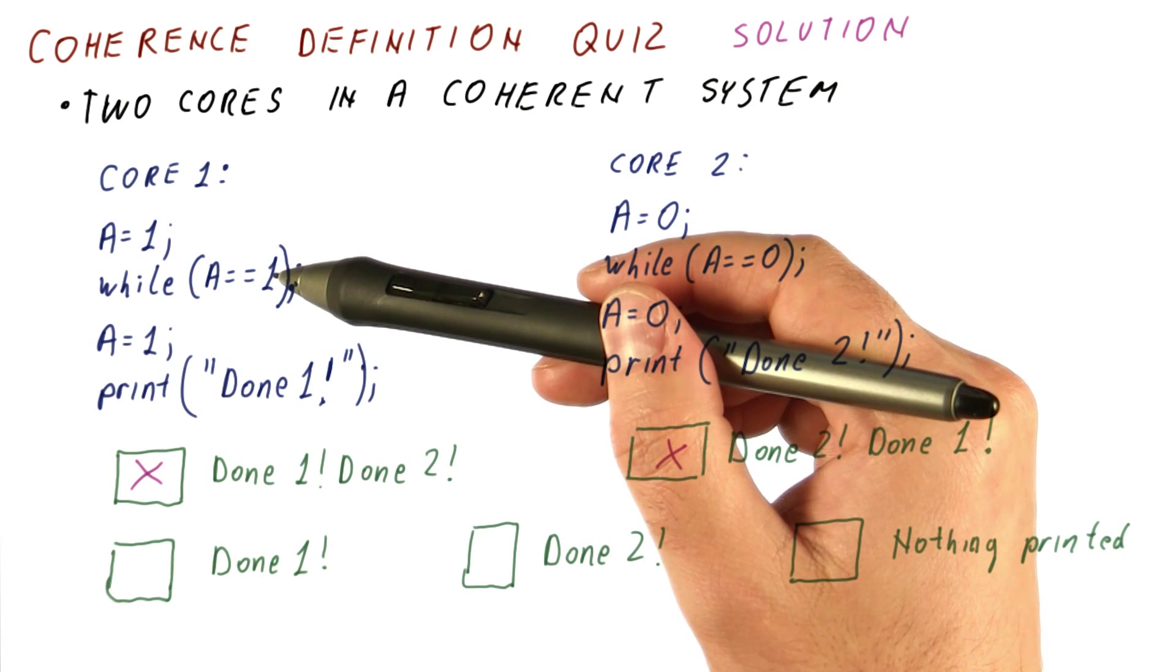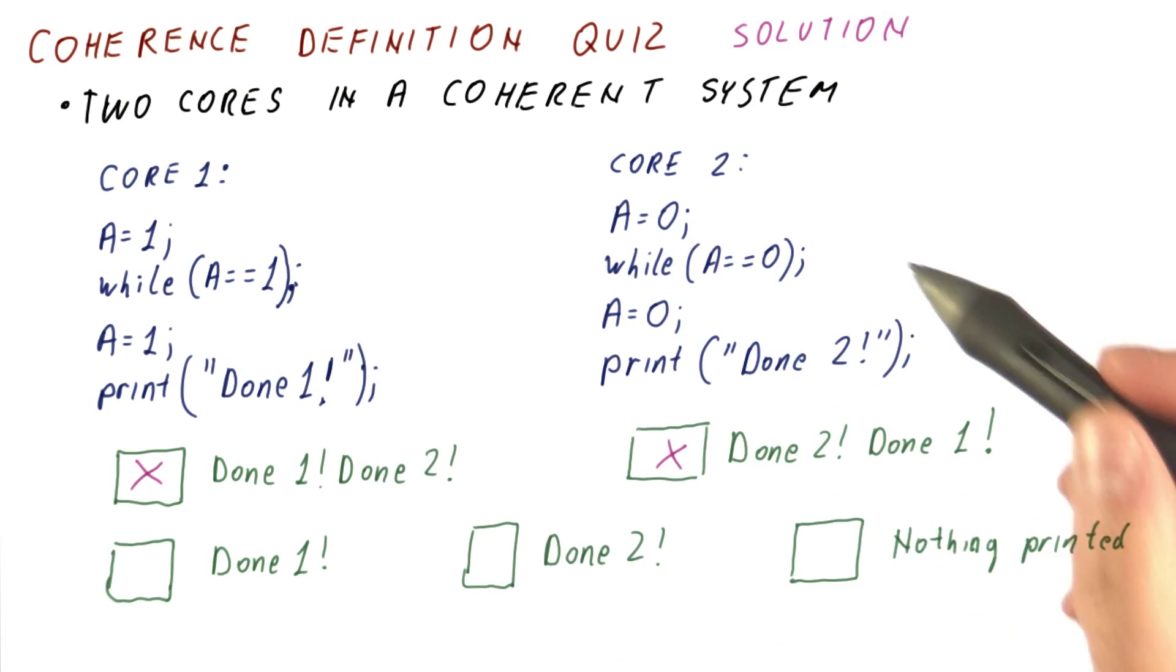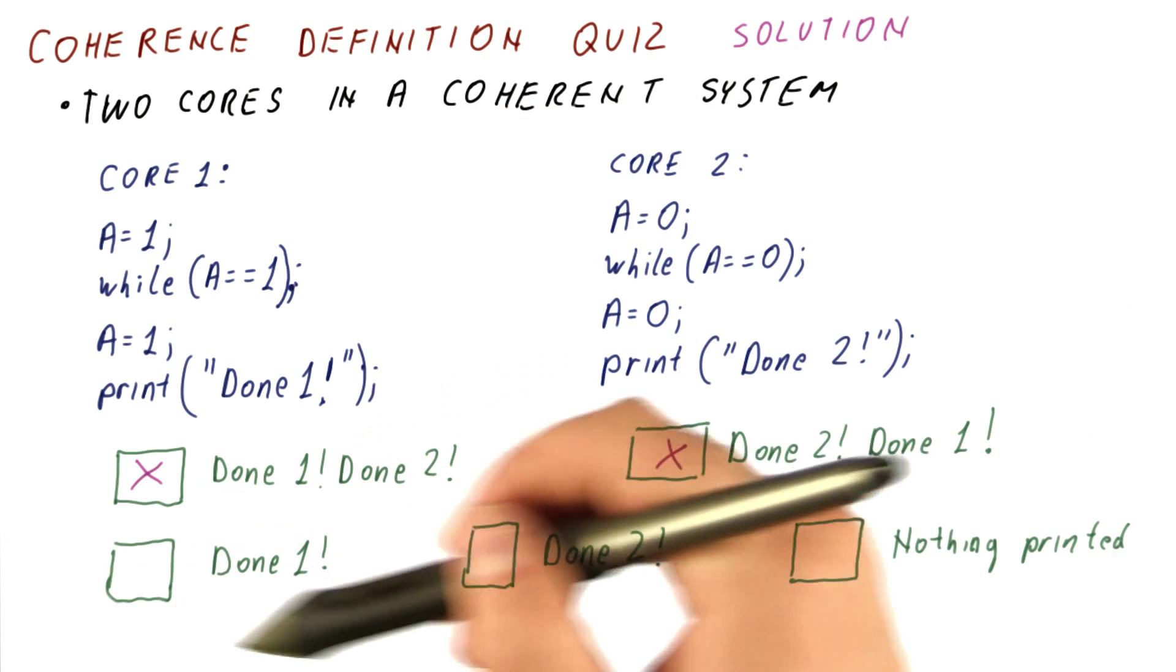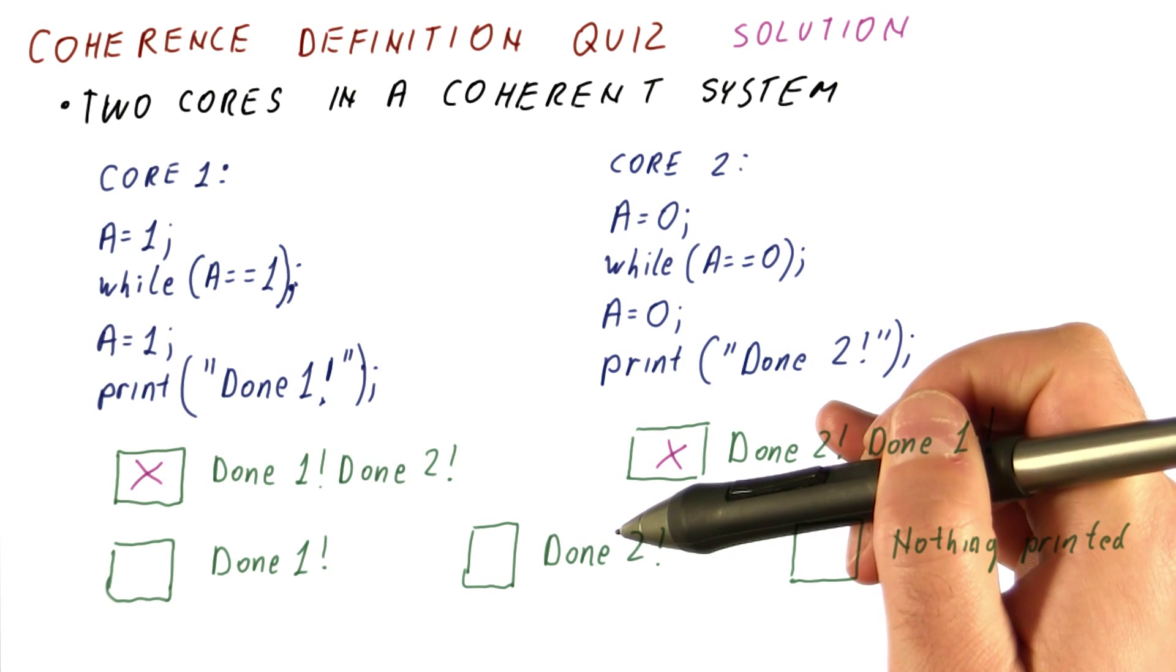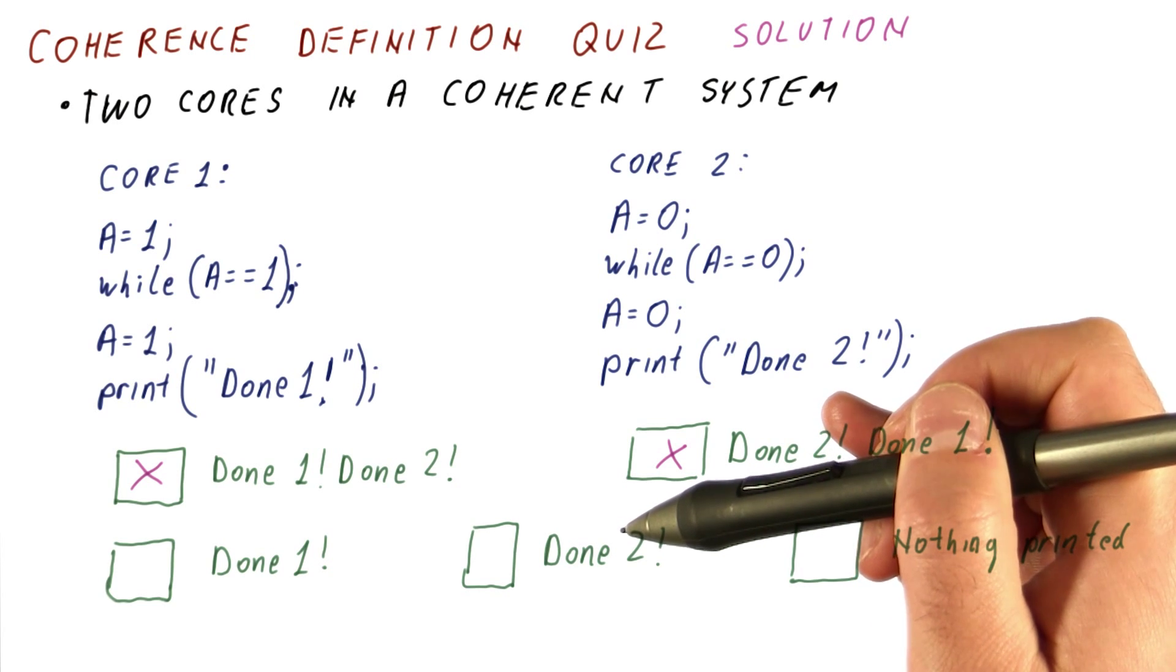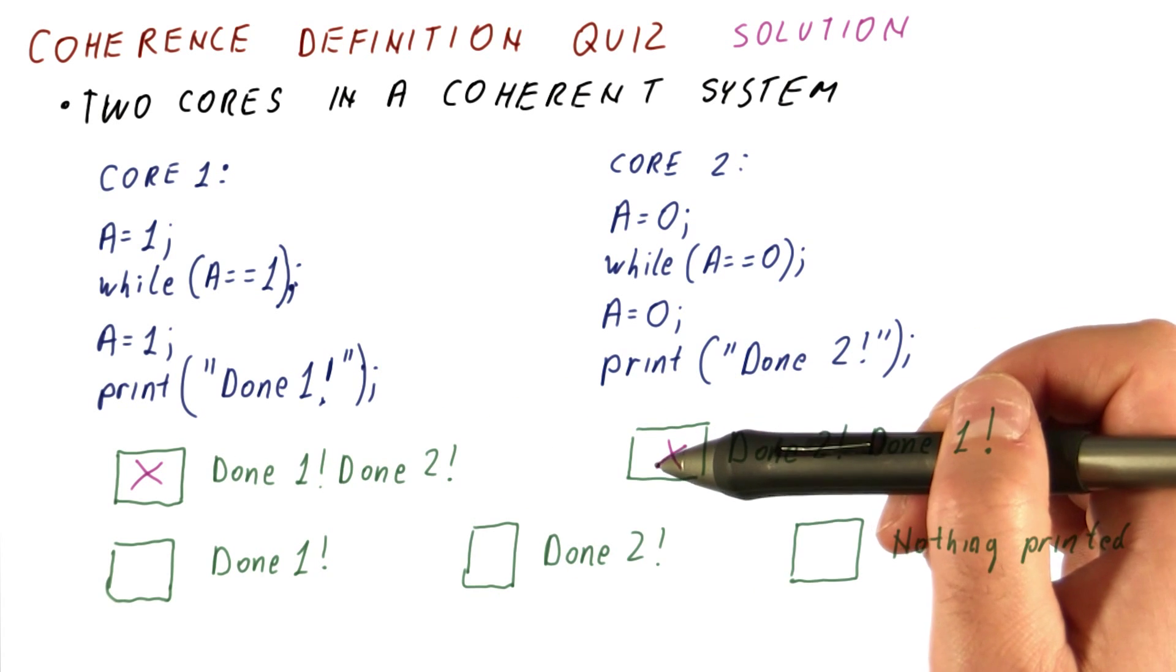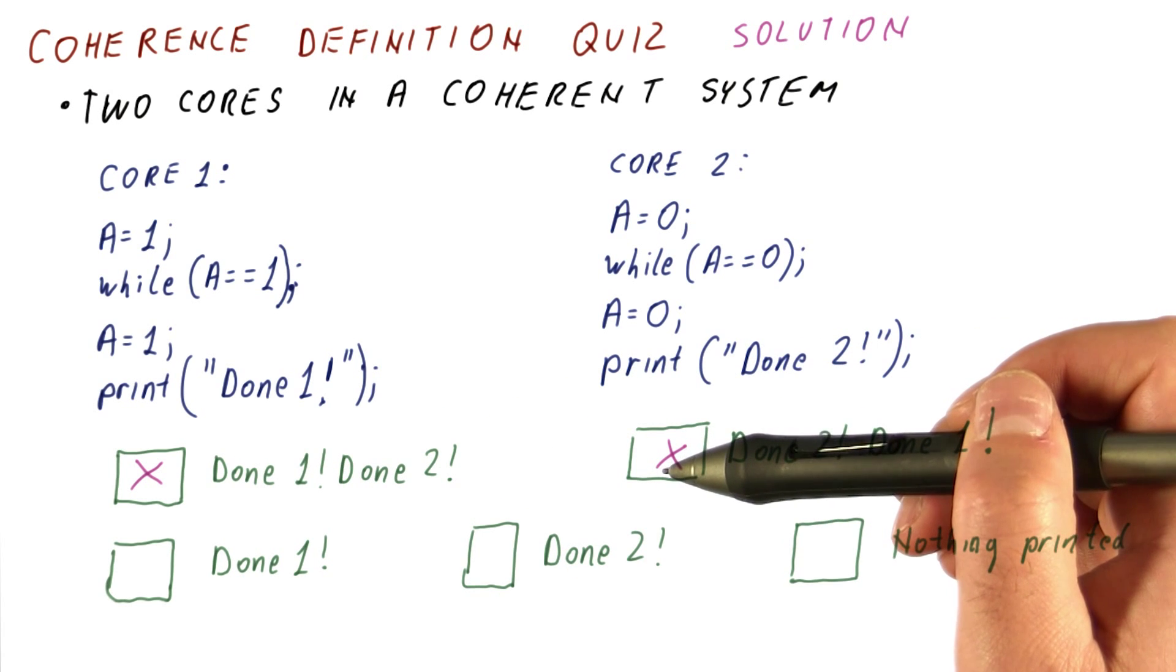And then you can get the other two possibilities here, by simply one of them not being entirely incoherent. So as you can see, a coherent system prevents some of the behaviors that are possible in an incoherent system. But all the behaviors that are possible in the coherent system are also possible in an incoherent one. So coherence is allowed in an incoherent system. It's just that incoherent systems don't guarantee that all their behaviors are going to be coherent.